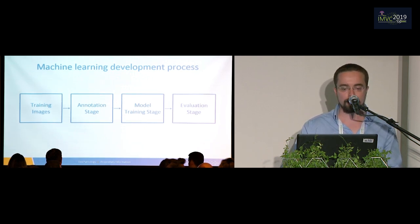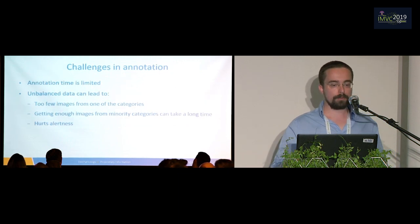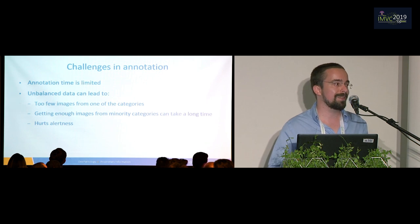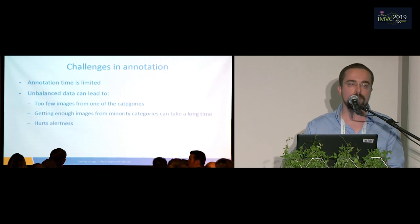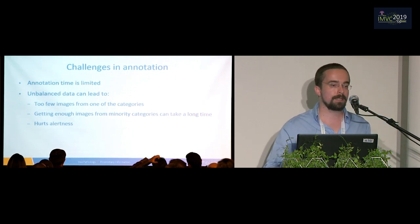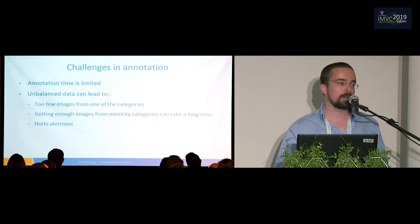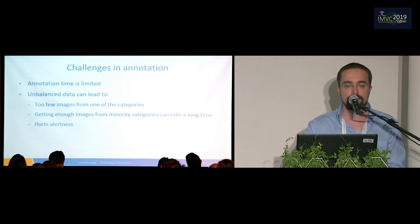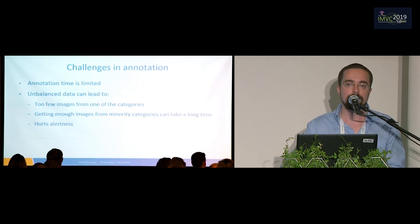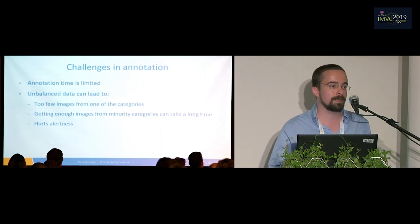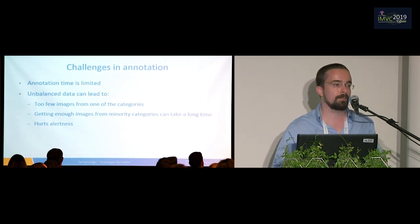The annotation stage is actually very challenging. First, the annotation time is usually very limited, so we're going to end up with just a small portion of the entire available dataset actually annotated. Also, medical datasets are usually very unbalanced — we'll either end up with too few images from some categories, or if we require a minimum number from every category, it's going to take a very long time to cover all of that. Unbalanced data also hurts alertness during annotation, because if we have a type of cell that's very rare and appears once in a thousand images, when we finally see that cell it will be very easy to miss it because we're not expecting it.